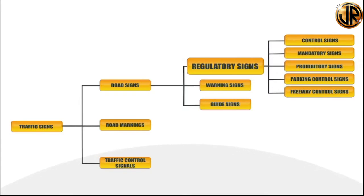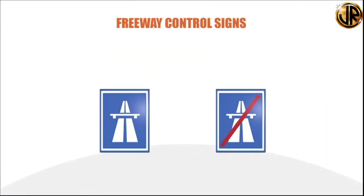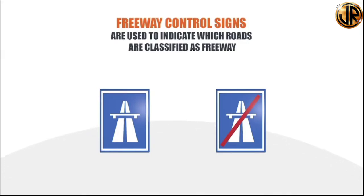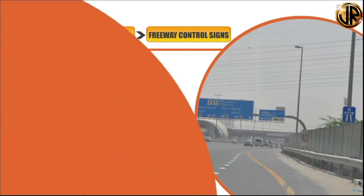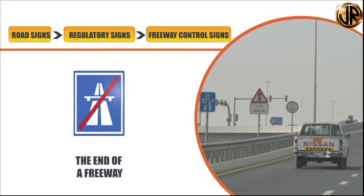Freeway control signs are used to indicate which roads are classified as freeway. The 'freeway begins' sign represents the beginning of a freeway; motorists must consider the codes of the freeway and drive at a speed appropriate to the situation. Commonly, the maximum speed on a freeway is 120 km/h and the minimum speed is 60 km/h. This sign is found at the freeway entry ramp. The 'freeway ends' sign informs the end of a freeway, removes all freeway restrictions, and is seen at the freeway exit ramp; drivers must consider the road situation and speed posted on the speed sign.